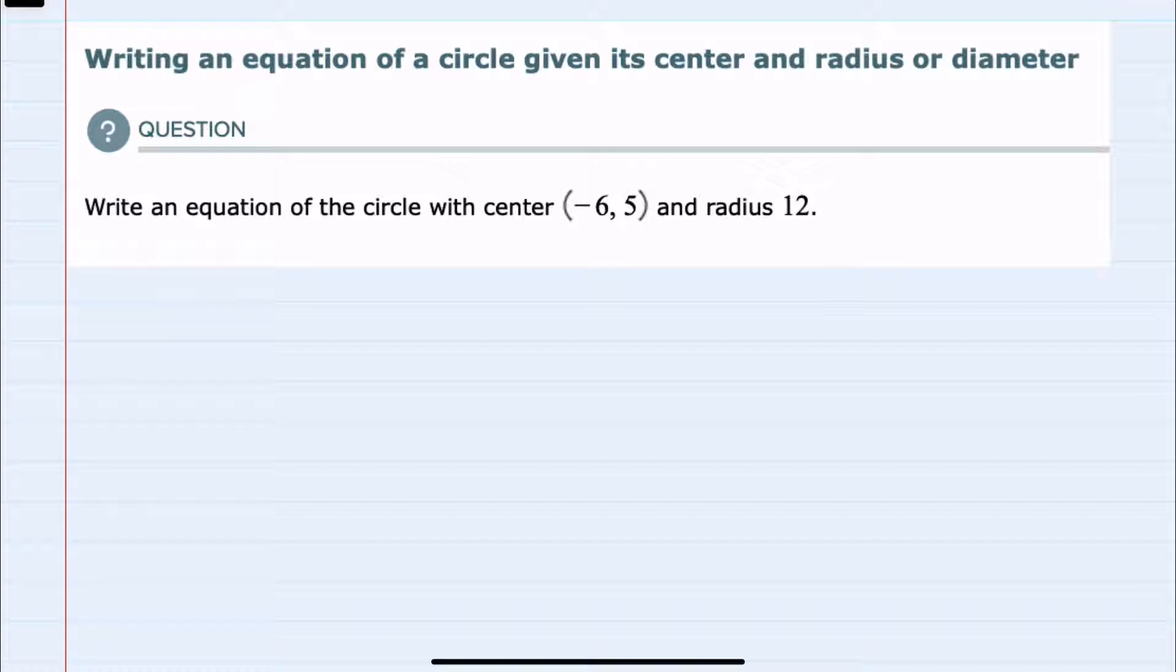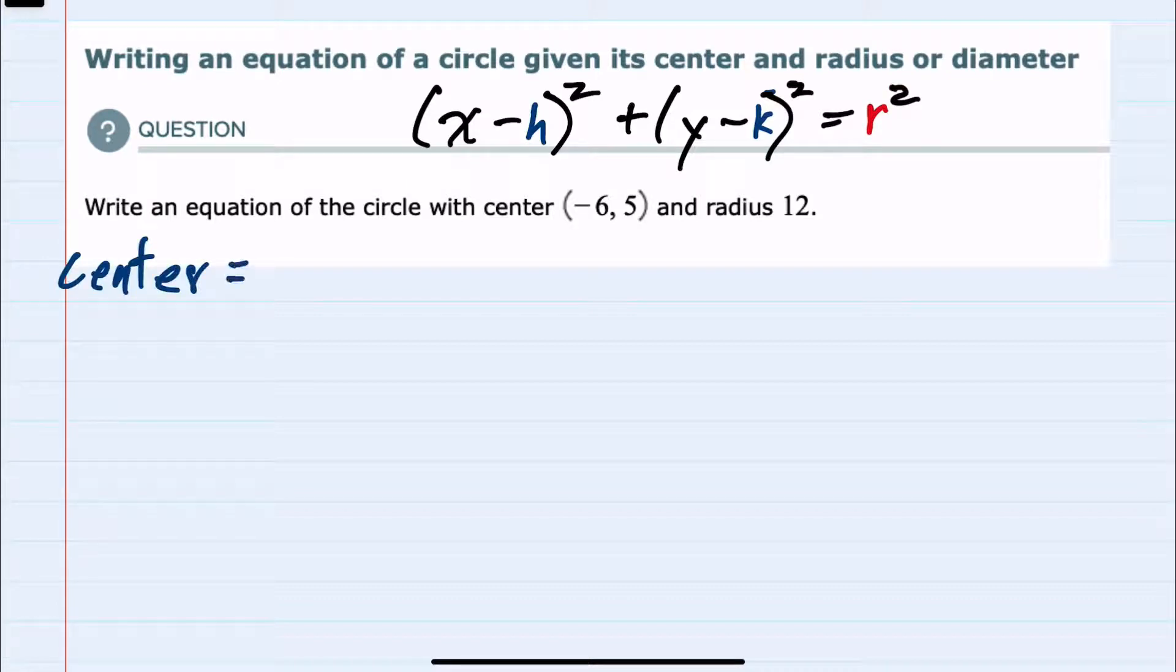Because we will need the radius to use the formula for a circle which is (x - h)² + (y - k)² = r², where the center is the point (h, k) and the radius is r.